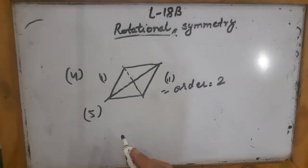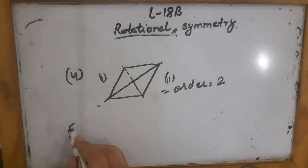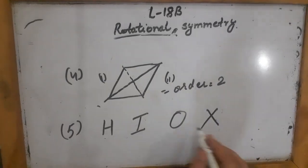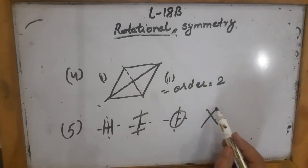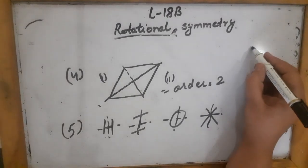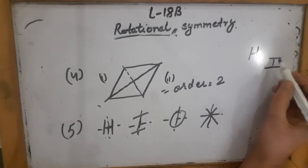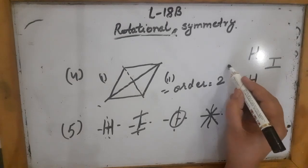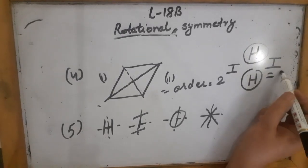Question 5: write 3 letters of the English alphabet which have 2 lines of symmetry and a rotational symmetry of order 2. We have four such letters: H, I, O, X. Each of these letters has 2 lines of symmetry and their order is also 2. For example, H — if I move it in a complete circle, at 90 degrees it looks different, at 180 degrees it looks the same, at 270 degrees it looks different again. So it looks the same 2 times, meaning its order is 2.